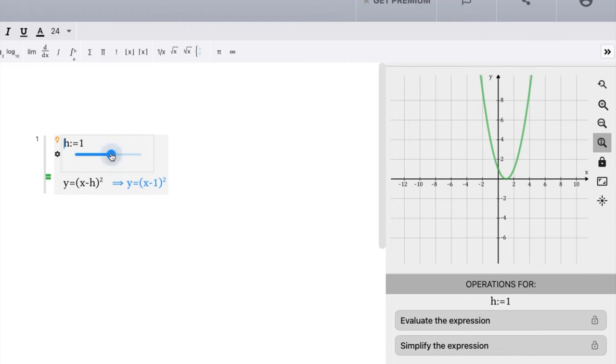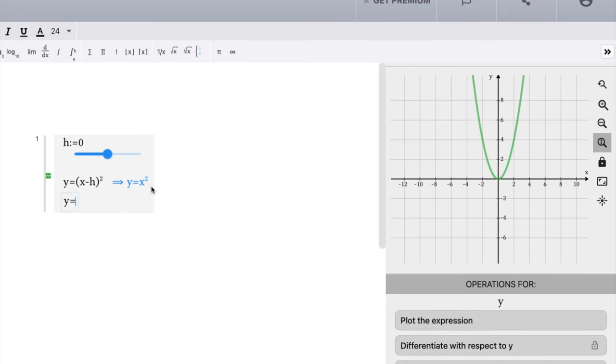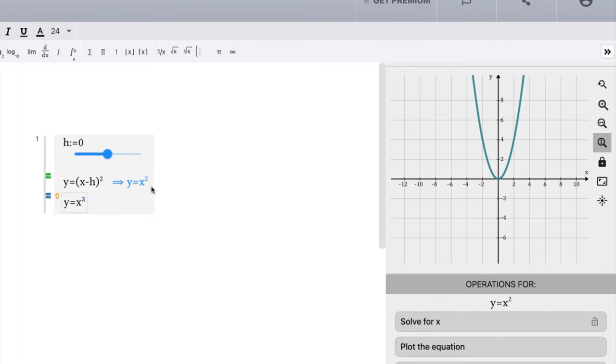All right, pretty simple and self-explanatory. So, we want to start with our base function y equals x squared. So, let's make a new one. Just y equals x squared. Very easy to type here.